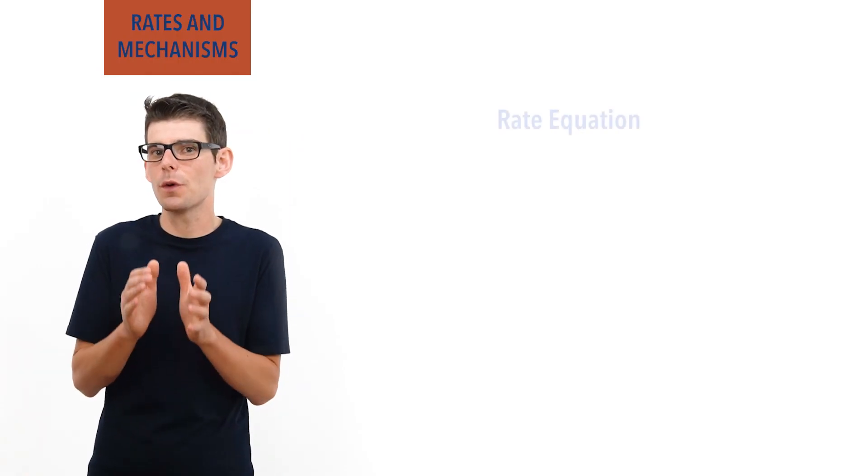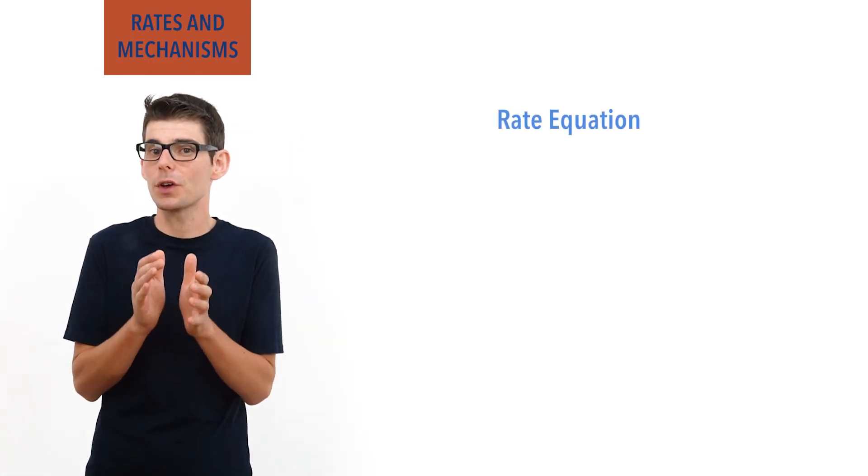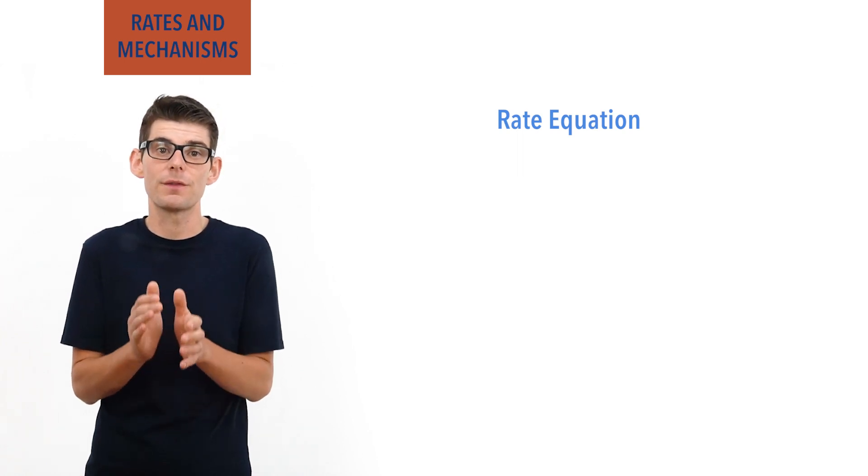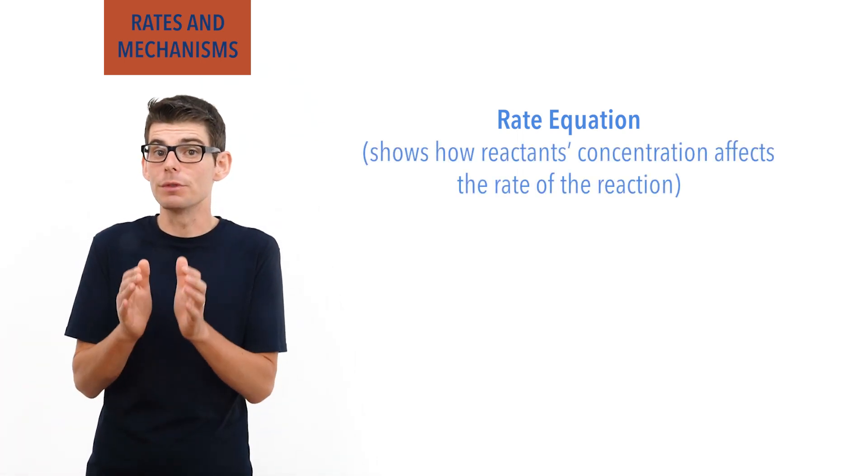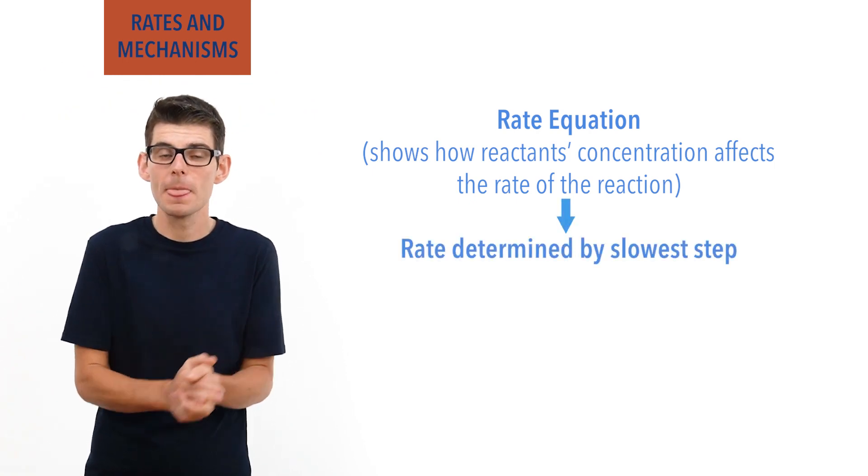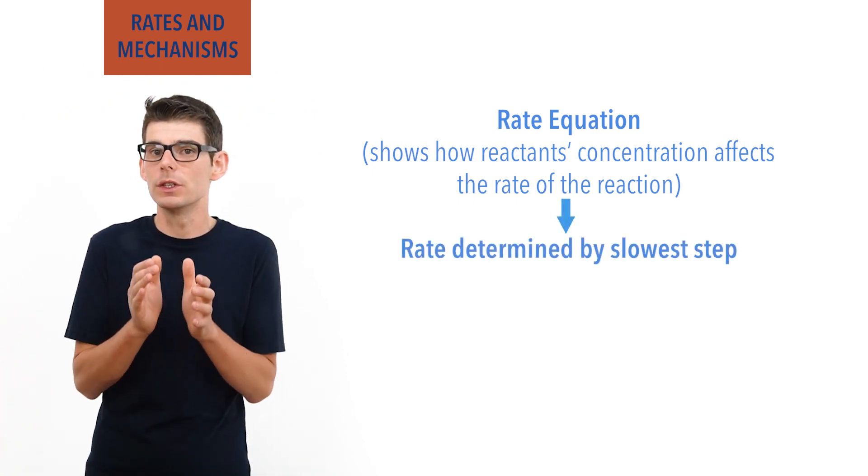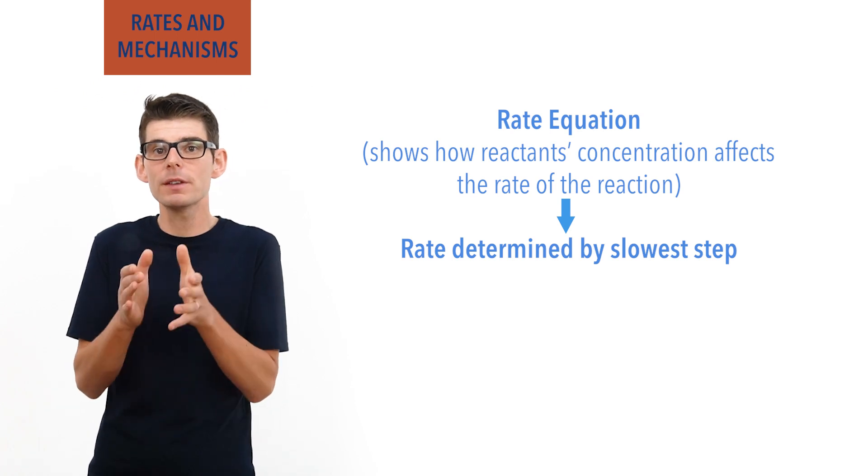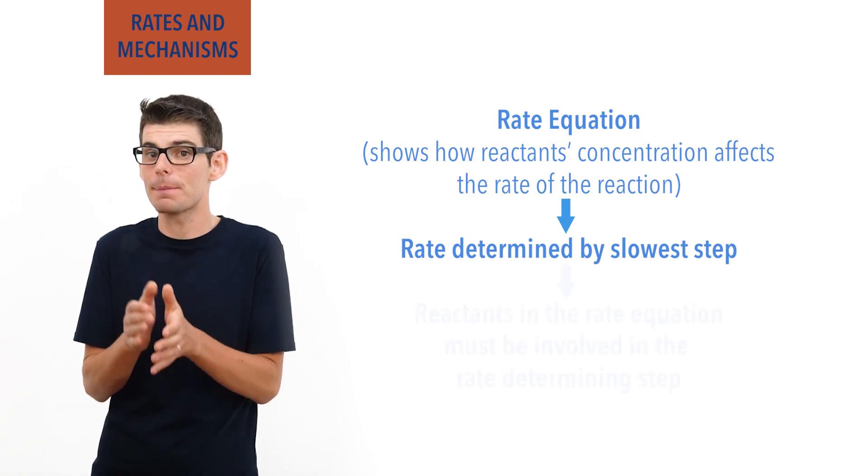If the rate equation for a reaction describes how the concentrations of reactants affects the rate, and the rate is determined by the slowest step in a multi-step reaction, the reactants involved in the rate equation must be involved in the rate determining step of the reaction.